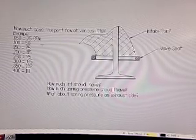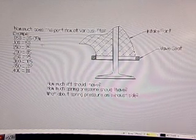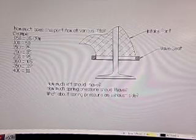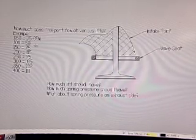So, at 050 lift, you have 35 CFM. At 100 thousandths lift, you have 50 CFM. So there's a 15 CFM increase with only a difference of 50 thousandths lift. Now, you go to 150 thousandths lift and you still have a 25 CFM increase, which is a nice increase.